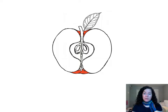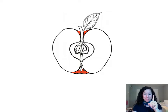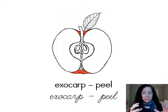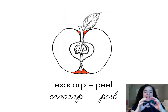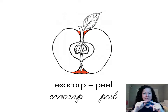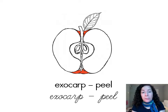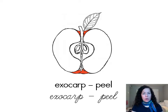Within the pericarp, there are three parts that we're going to be learning about. The first one is the exocarp. Exo means outside, and the exocarp is the protective layer that covers the outside of a fruit or vegetable. We know it also as a peel.